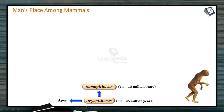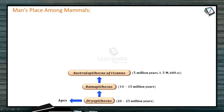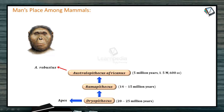From Ramapithecus came Australopithecus africanus. Afarensis is one form — this is Australopithecus africanus, about 5 million years ago. From Australopithecus came one more branch: Australopithecus robustus.